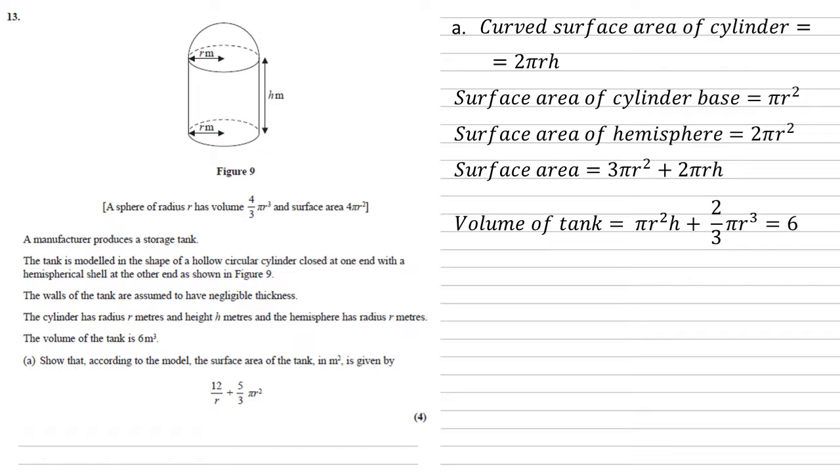So, if we can now rearrange this, set it equal to h, we can substitute that h back into our surface area equation. Subtracting 2/3 πr³ from each side, we then divide by the πr², so we get 6 over πr², minus 2/3 r.